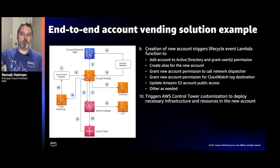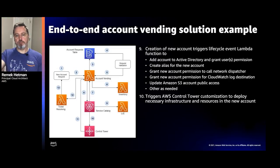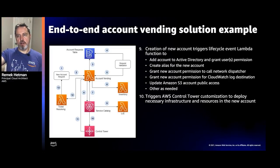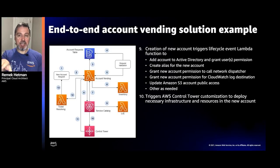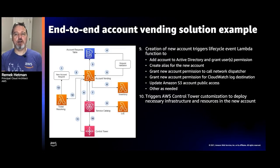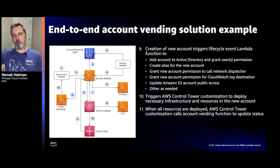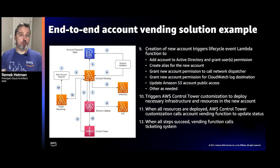Simultaneously, Control Tower starts the CFCT customization, deploying all resources in the new account. As noted when reviewing the live manifest, the very last resource in the manifest calls a Lambda function signaling that customization deployment is complete and the account is ready. When that notification is received, the account is fully baselined with all resources. The final step calls the ticketing system to resolve the ticket and notify the user that the account has been successfully vended.